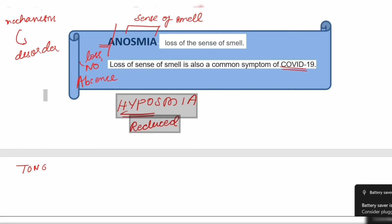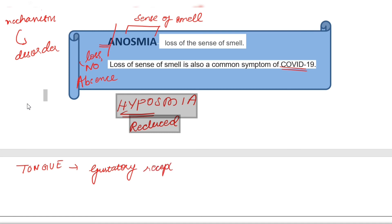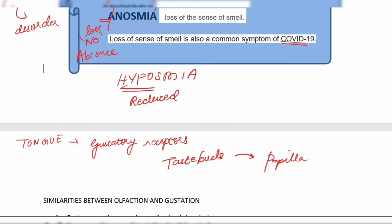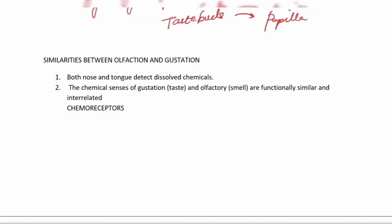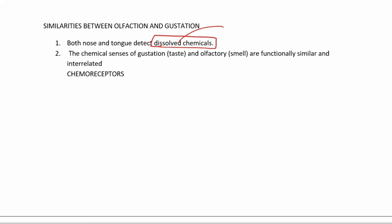The next sense organ to discuss is the tongue. The tongue has gustatory receptors and taste buds for detecting different kinds of taste — sweet, sour, bitter, and so on. These taste buds are projections of the papillae. You will learn more about the tongue in the chapter on the digestive system. The sense of gustation and olfaction have similarities — both the tongue and the nose detect dissolved chemicals.